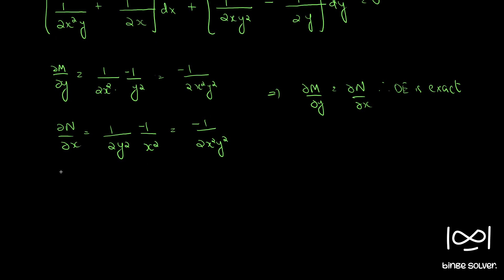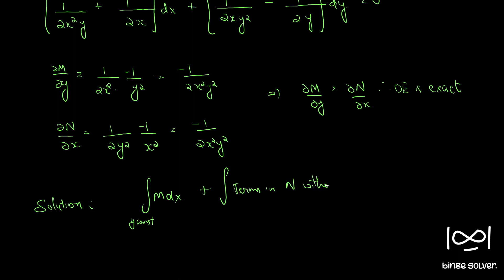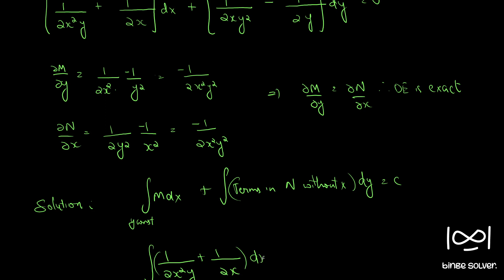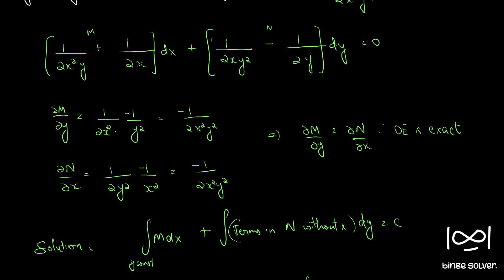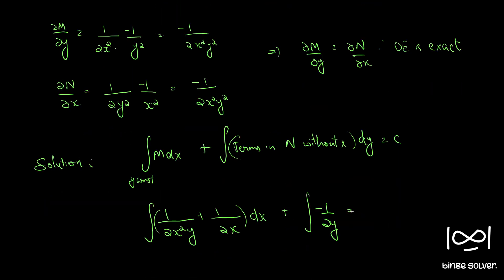The solution is given by: ∫M dx (with y as constant) + ∫(terms in N without x) dy = c. So ∫M dx = ∫[1/(2xy²) + 1/(2x)]dx. The only term in N without x is -1/(2y), so the solution becomes ∫[1/(2xy²) + 1/(2x)]dx + ∫(-1/(2y))dy = c.